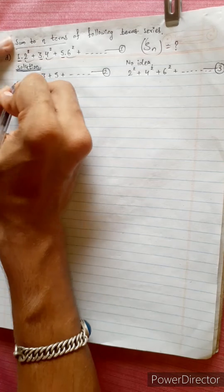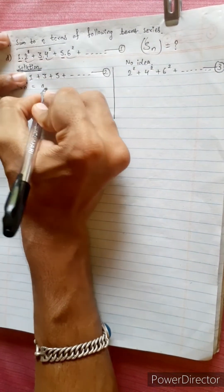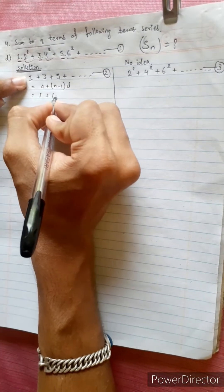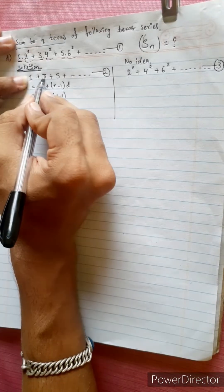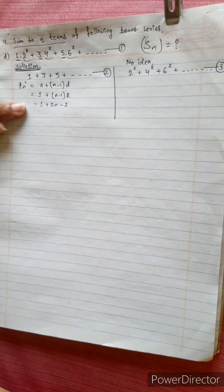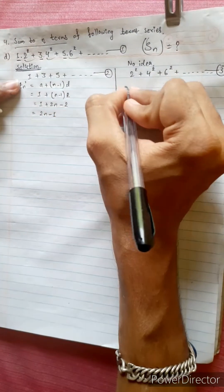Also, we could find the nth term. Let's call it Tn dash. Tn dash equals to a plus n minus 1 times d. a is 1, difference is 2 (since 1, 3, 5...). So 1 plus 2n minus 2 equals 2n minus 1.